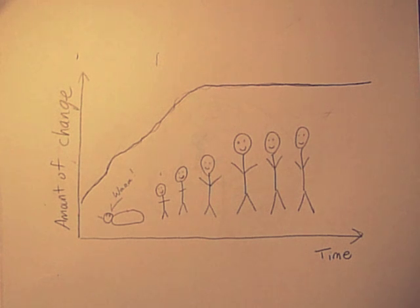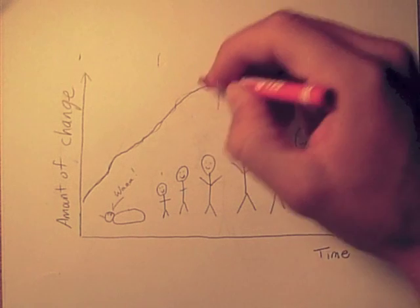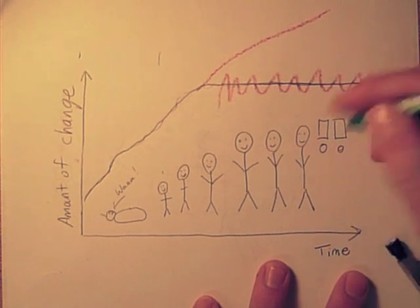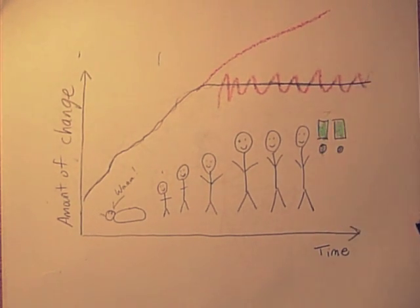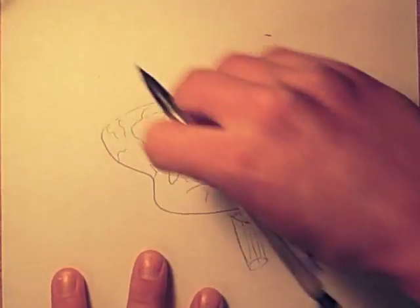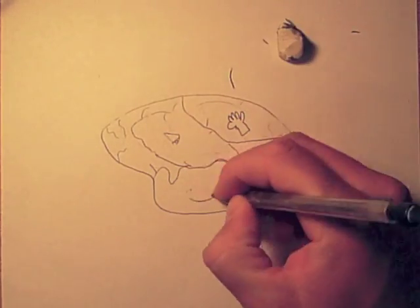New science is showing that neuroplasticity, and even neurogenesis, which is the growth of new brain cells, continues well into adulthood at deeper levels than ever previously imagined. For example, studies have seen the brains of amputees completely reassign the areas of the brain responsible for the lost limbs.